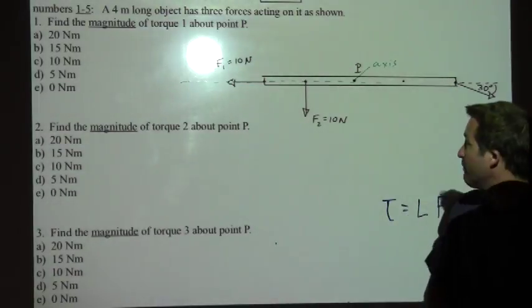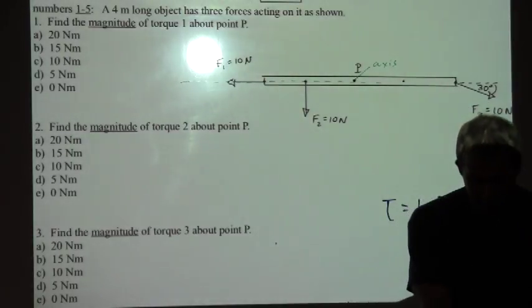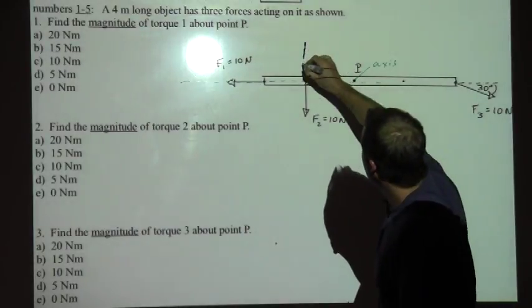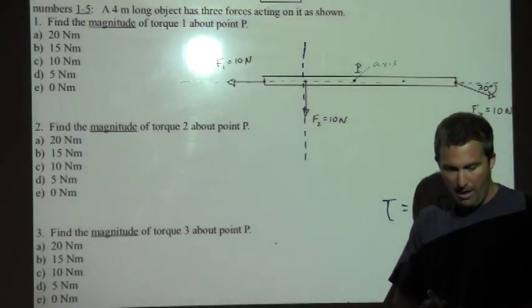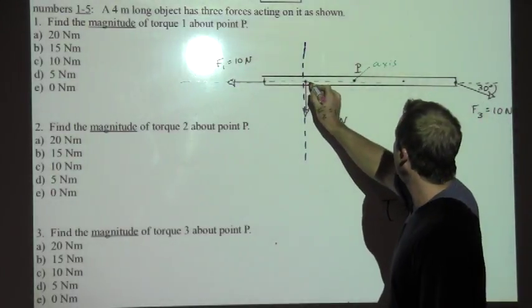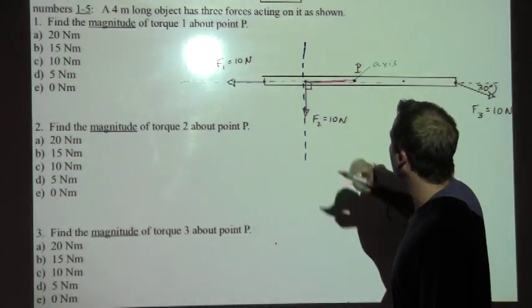And so we can see that for force two here, I would draw in another dotted line, and I guess I will use another color here. There's my dotted line that extends through force two, and the shortest distance between that dotted line and my axis point is right here. And it always makes a right angle here.